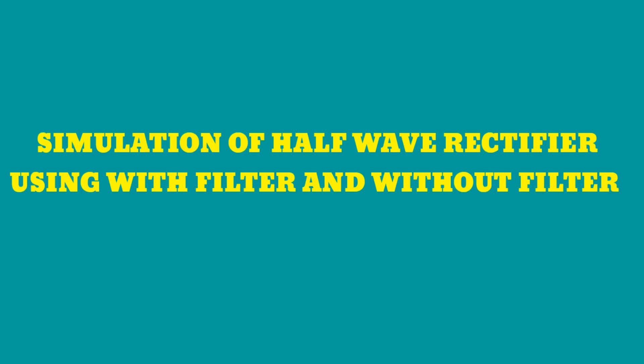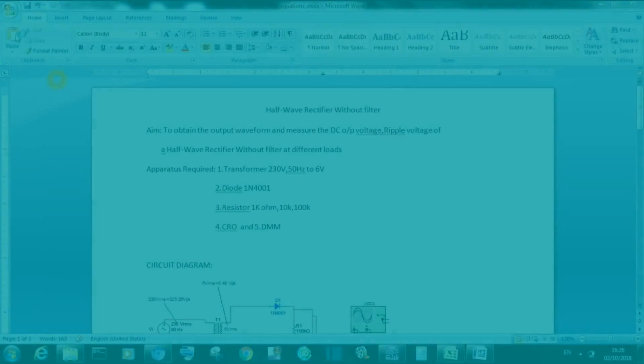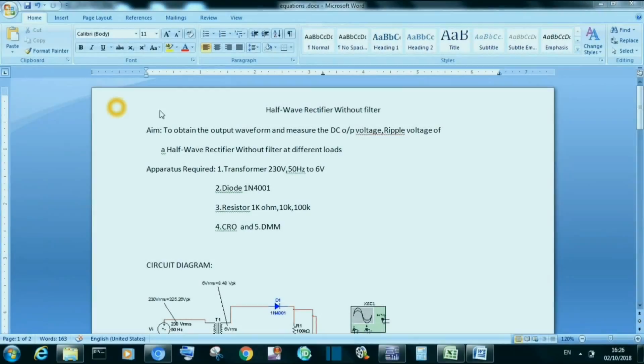First of all, what is a rectifier? A rectifier is a circuit which converts the AC voltage to a pulsating DC voltage. There are three different types of diode rectifiers: half-wave rectifier, full-wave rectifier, and bridge rectifier.